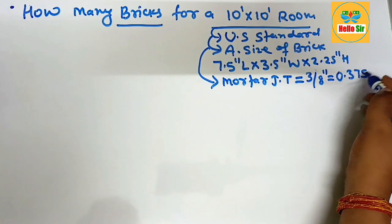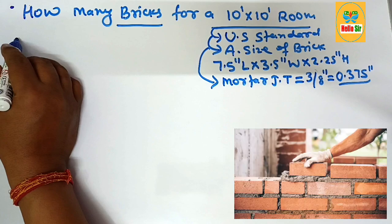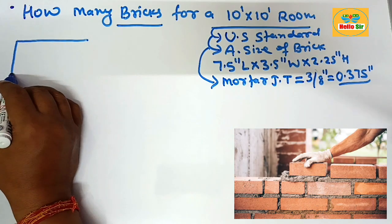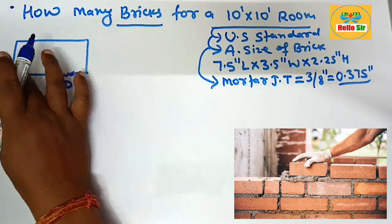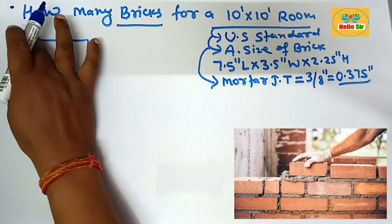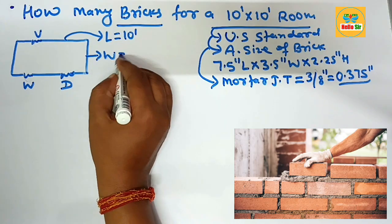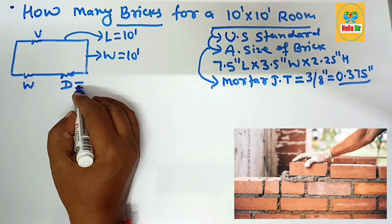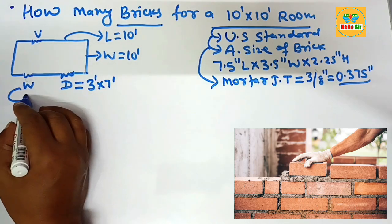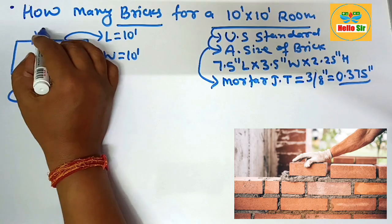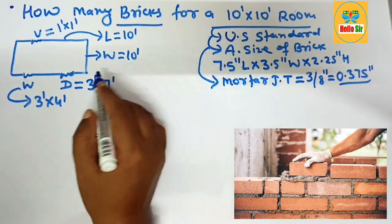Remember the mortar joint thickness of 0.375 inches. For the room, we make a rough diagram to understand the dimensions. This is a 10 by 10 room having a single door, a single window, and one vent. The room length is 10 foot, width is 10 foot. The standard door size in the United States is 3 foot by 7 foot, the standard window size is 3 by 4 foot, and the common vent size is 1 foot.